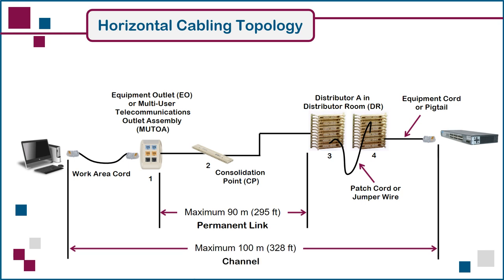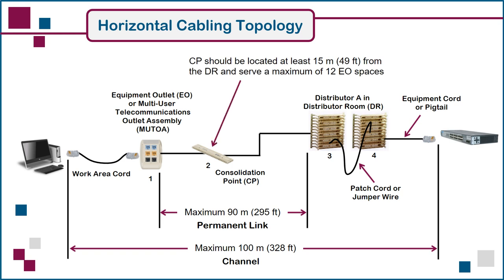If a consolidation point or CP connector is used — recall that it's optional — the standards recommend a minimum 15 meter or 49 foot distance from the DR, in order to avoid having multiple connection points too close to each other, which can negatively affect signal transmission. As well, any individual CP should serve no more than 12 user work areas. And if a MUTOA is used in place of an equipment outlet, it should also serve no more than the equivalent of 12 work areas.